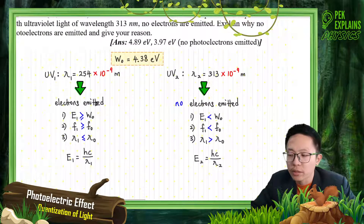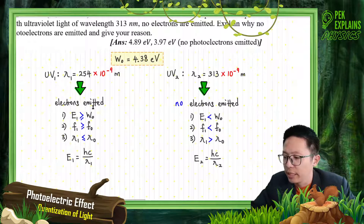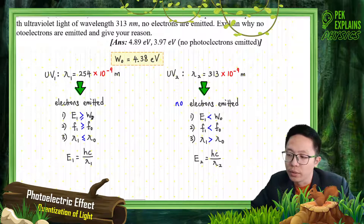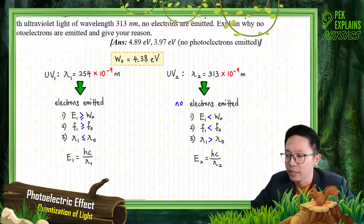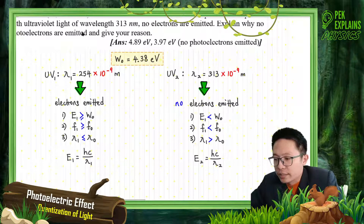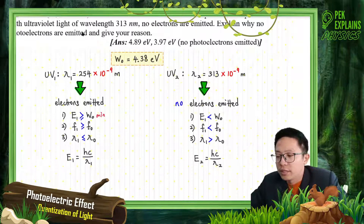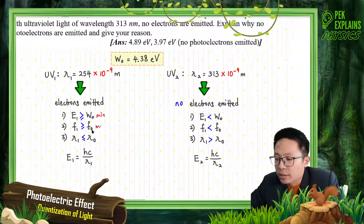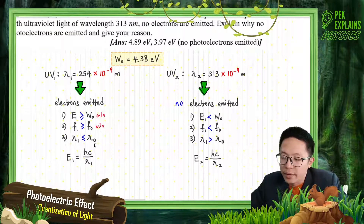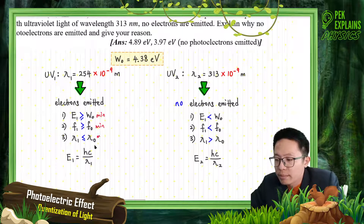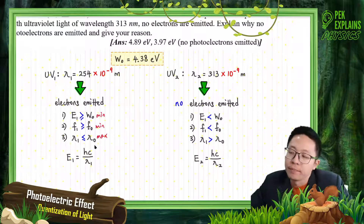Electrons can be ejected if the energy of the incident photon is greater than or equal to the work function. The work function is the minimum energy required. The threshold frequency is the minimum frequency required, and the threshold wavelength is the maximum threshold wavelength allowed.